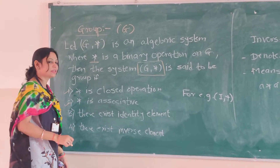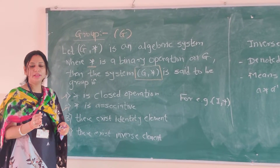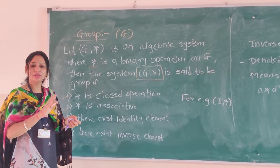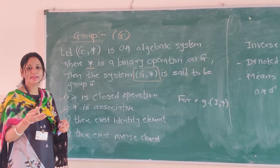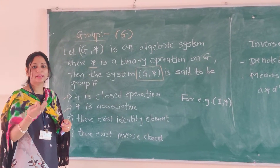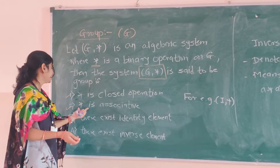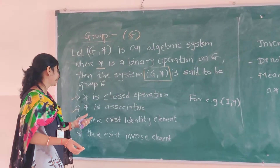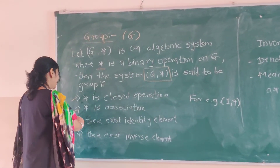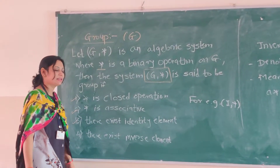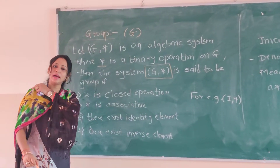Star is associative, meaning you are changing the places of elements and still getting the same value. That is associativity.